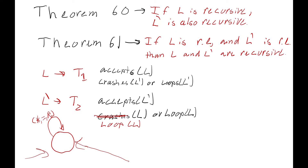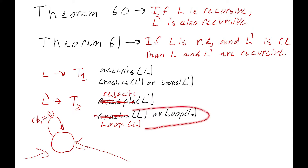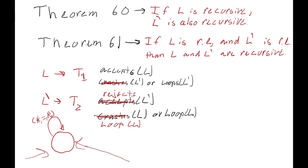We make one more change to this secondary machine: all the accepts are turned into rejects by erasing the edges that go to halt states that would accept the word. So now it crashes on all the words in L complement and loops forever on all the words in L. We also make the same change to Turing machine 1 — taking all the crashes and turning them into loops — so that it loops forever on all the words in L complement.